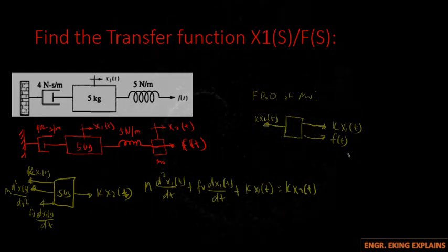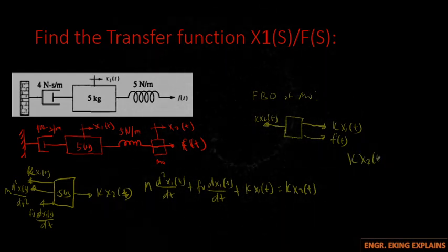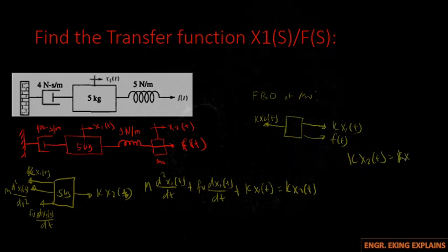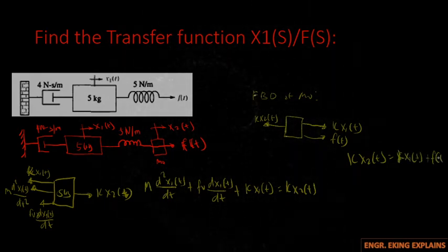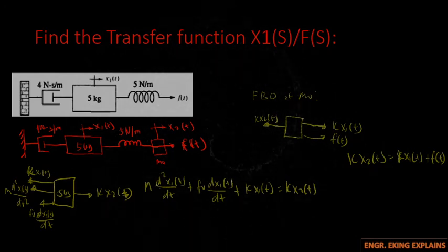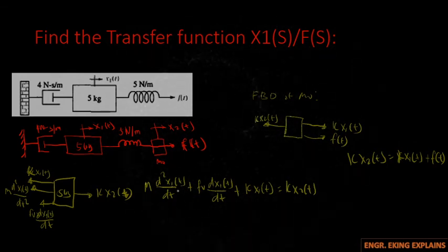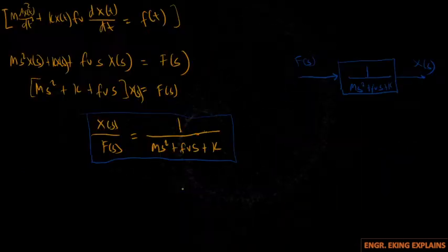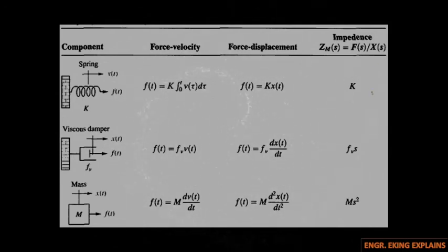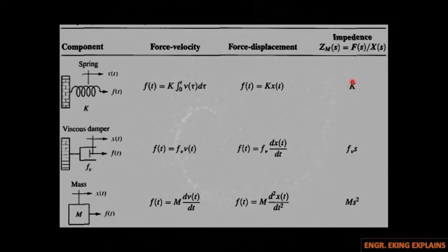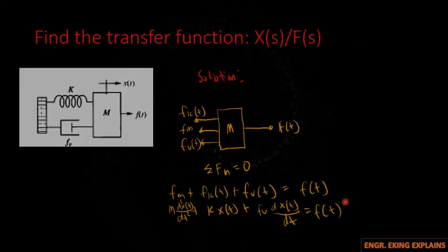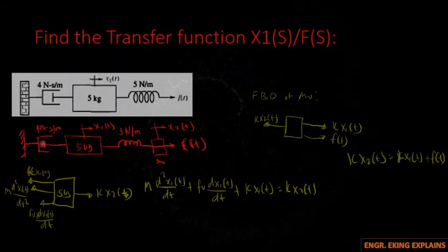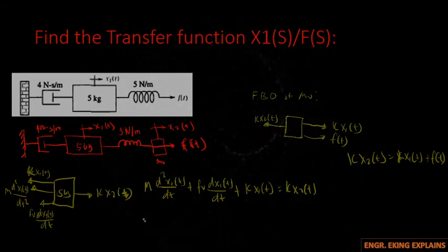For the FVD at M0, we have K · x2(t) = K · x1(t) + F(t). If we take the Laplace transform of both sides of the equation, we can now have these terms in terms of the impedances. For the spring we have K, for the damper we have FV·s, and for the mass we have m·s².